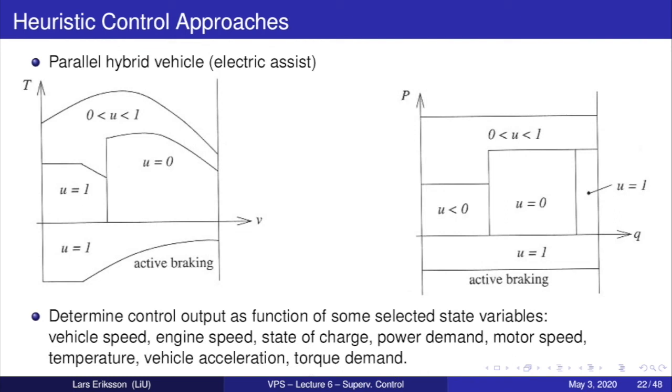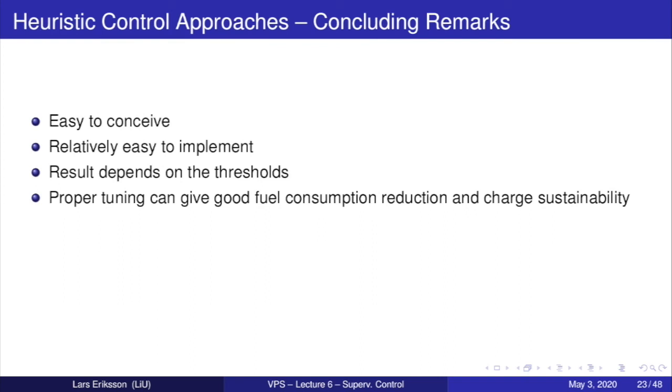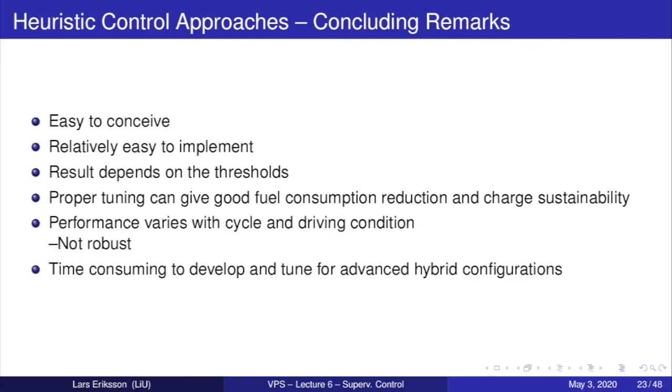So the control output has a function of some selected variables. We have the vehicle speed, engine speed, state of charge, power demand, motor speed. We can also have temperature of the batteries. For example, temperature of the battery is extremely important for the lifetime of the battery. We have vehicle acceleration, we have torque demand that come into play and influence the decisions that are made with respect to what we should utilize to propel the vehicle. The heuristic control approaches are easy to conceive. They are relatively easy to implement, and the results will depend on the thresholds that are set in the algorithms. Proper tuning of these thresholds can give very good fuel consumption reduction and charge sustainability. But performance varies with cycle and driving conditions. So they are not necessarily robust against all variations that you could see. And it's also very time consuming to develop and tune them for advanced hybrid configurations. When you have many degrees of freedom, you get a lot of different rules that can come in and influence the solution.